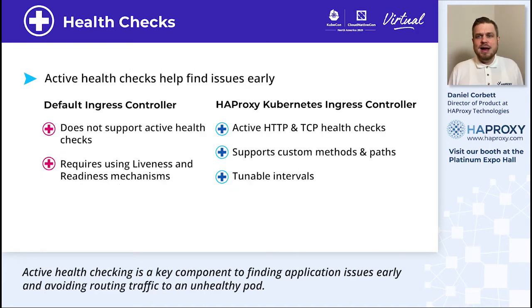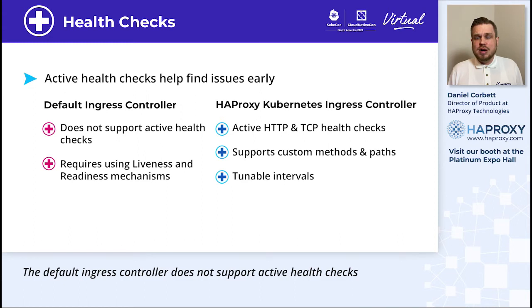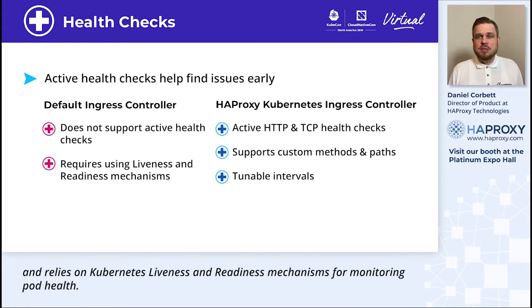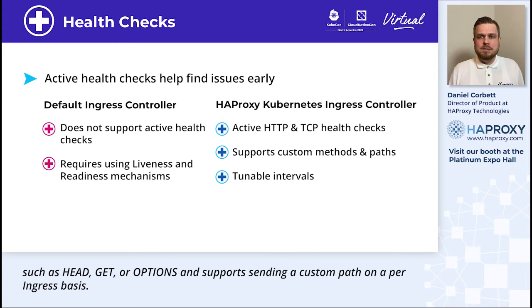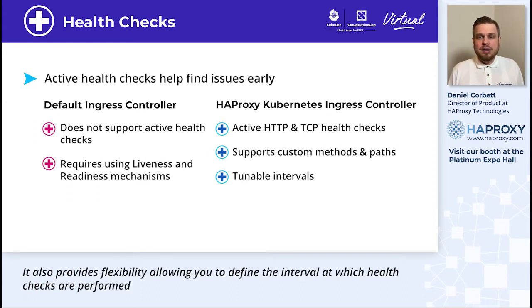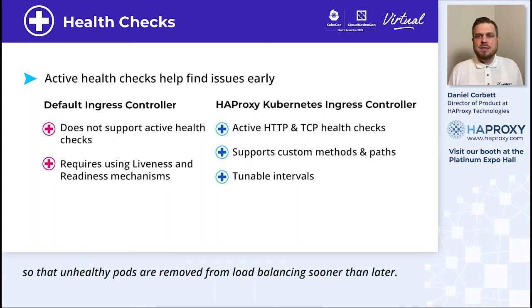Active health checking is a key component to finding application issues early and avoiding routing traffic to an unhealthy pod. The default ingress controller does not support active health checks and relies on Kubernetes liveness and readiness mechanisms for monitoring pod health. The HAProxy Kubernetes ingress controller does support active health checking, and it can be configured to use custom methods such as HEAD, GET, or OPTIONS, and supports sending a custom path on a per-ingress basis. It also provides flexibility, allowing you to define the interval at which health checks are performed so that unhealthy pods are removed from load balancing sooner rather than later.